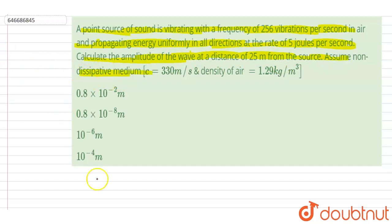medium is non-dissipative. So if you see here, at a distance of 25 meters, to get that intensity, it will be power, that is 5 joules per second, divided by 4π r², where r is the distance of this point.